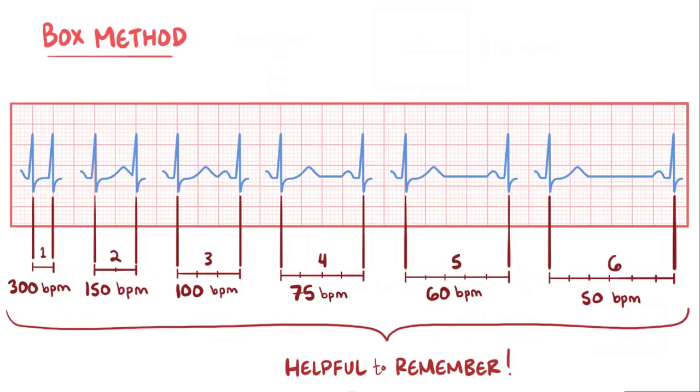For example, if there are between three and four big boxes between R waves, then we know that the heart rate must be between 75 and 100 beats per minute.